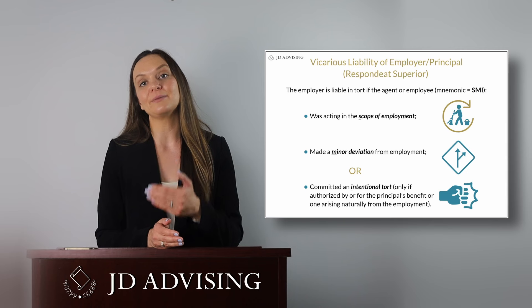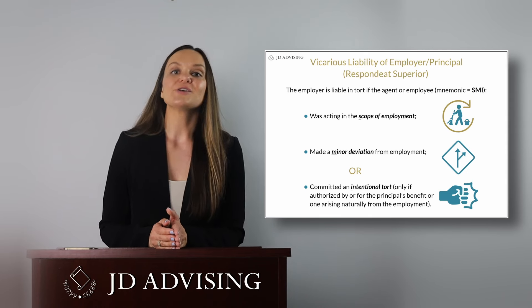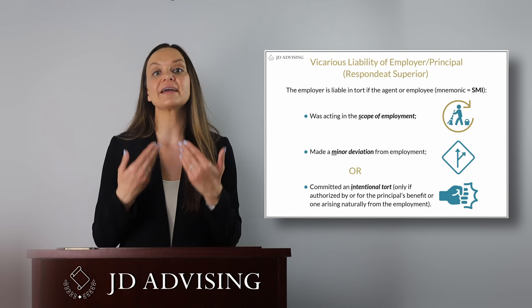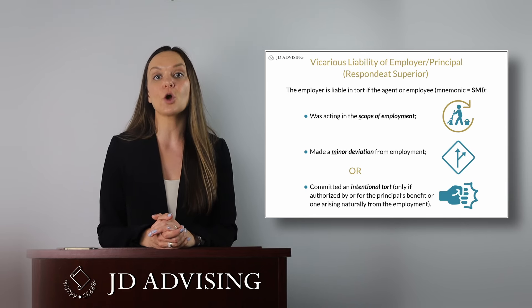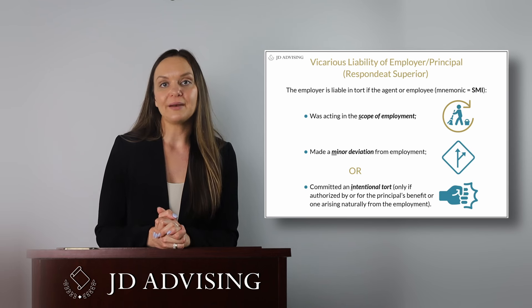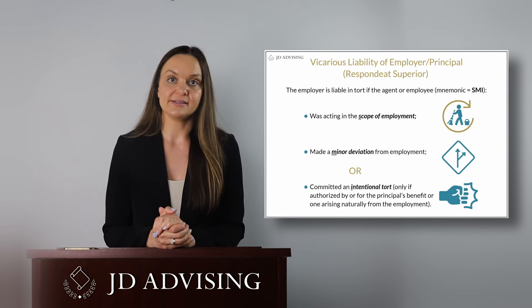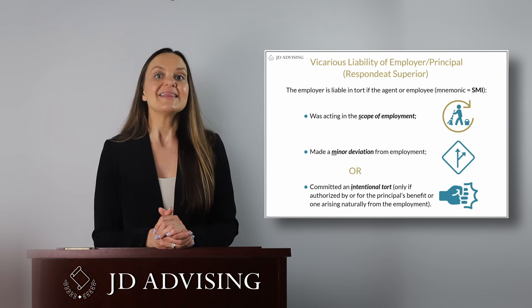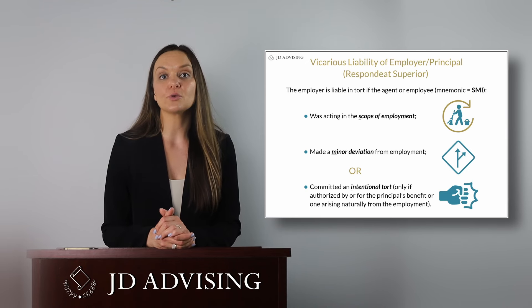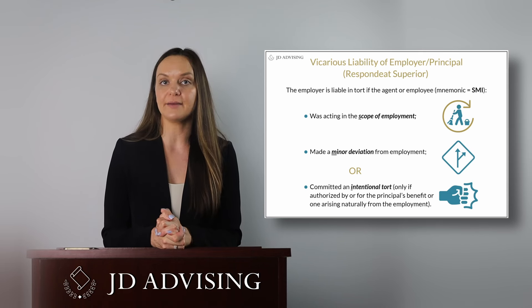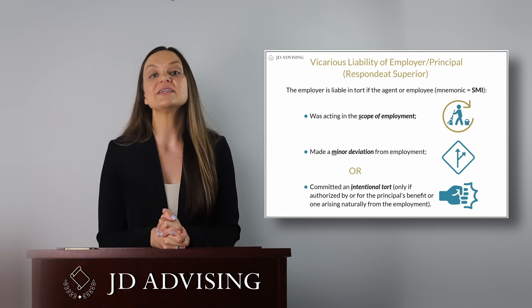Another highly tested agency issue is vicarious and direct liability. An agent is always liable for their own torts, and principals can become vicariously liable if the agent was acting in the scope of their employment and made only a minor deviation from that employment. There are also instances where a principal can become liable for the intentional torts of their agents — specifically when the intentional tort was committed for the principal's benefit, was authorized by the principal, or arose naturally due to the nature of employment.